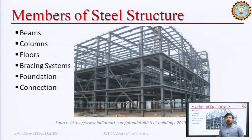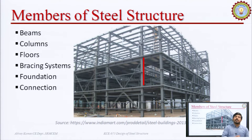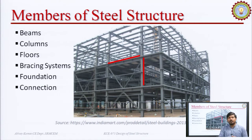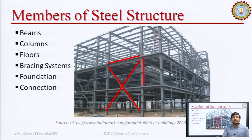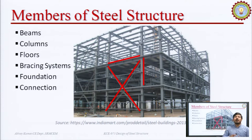Beams are those members which are subjected to flexural loading. Columns are those members which are subjected to compressive loading — we can see a column highlighted in this figure. The beam is also highlighted and is subjected to flexural loading; it will bend as the loading is applied in the transverse direction. Bracing systems are provided to support the horizontal loads on the steel structure, and bracing members may be subjected to tension or compression depending upon the direction of the applied loading.